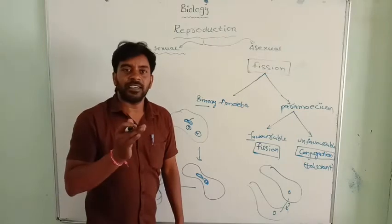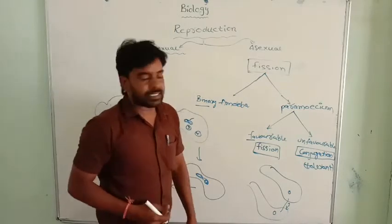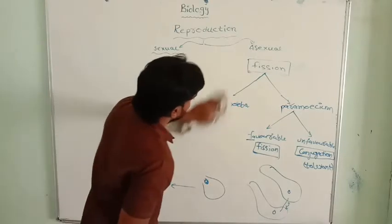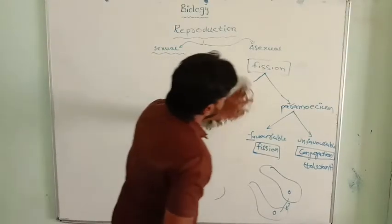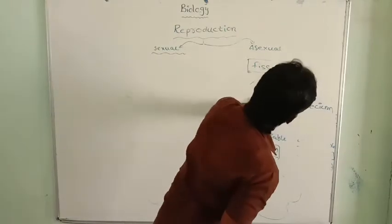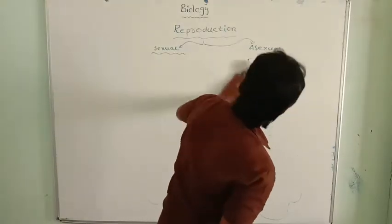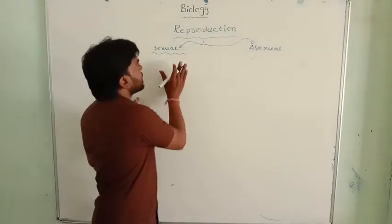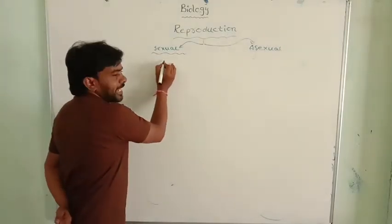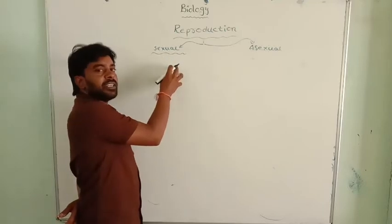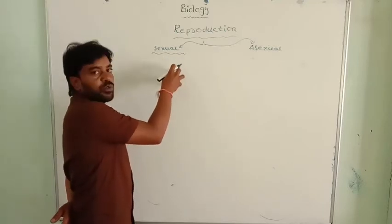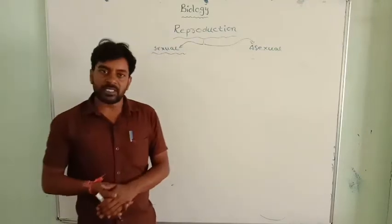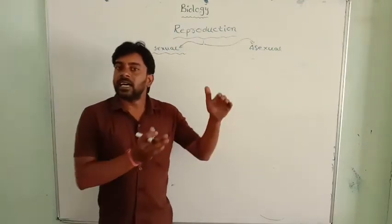Now let us discuss about the asexual mode of reproduction in plants. You know very well plants can reproduce both sexually and asexually. Here in sexual reproduction, as I told you, pollen means male gametes and ovule means female gametes. Male and female flowers are there. Bisexual and unisexual flowers are there.